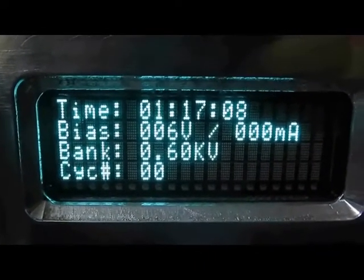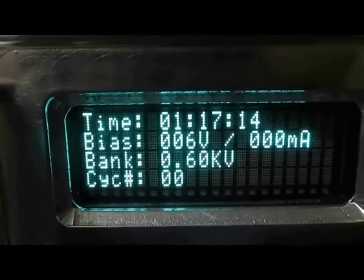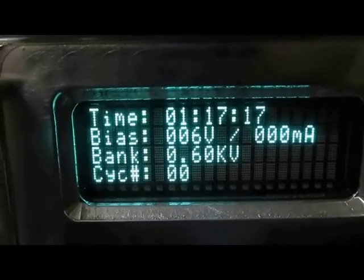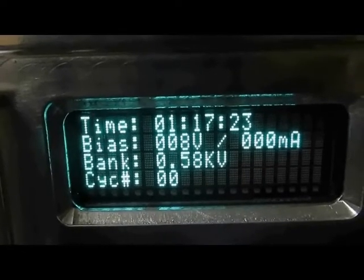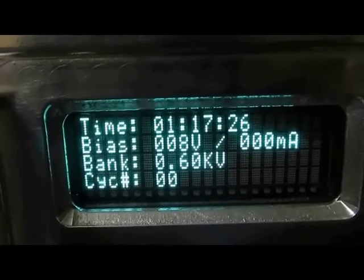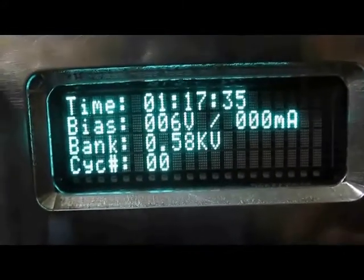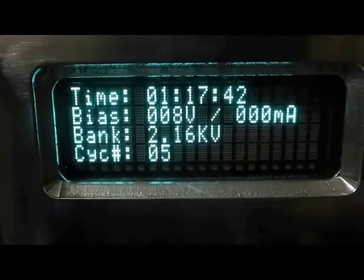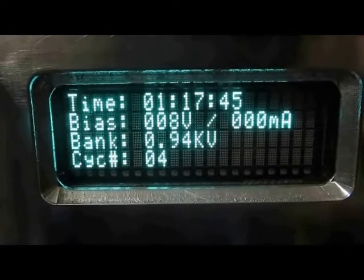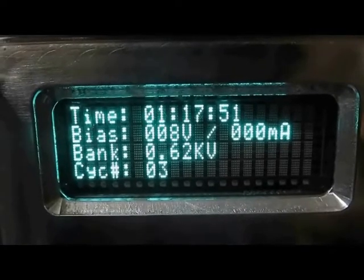If you're kind of curious what this looks like, the top is the time. So the generator's been on for 1 hour, 17 minutes, and 12 seconds. The bias voltage is basically off at 6 volts and it's not drawing any current. And the bank voltage is currently about 600 volts and no cycles. So if I go ahead and turn this thing on, you'll see the cycle count will go to 5. The bank will charge. You can see it discharges. It charges to roughly 2.5 kV, then it will do the discharge.